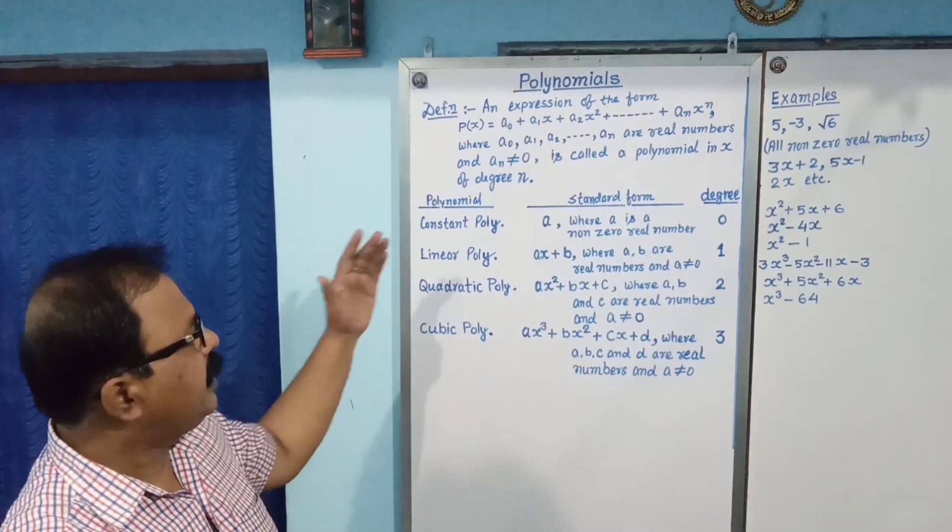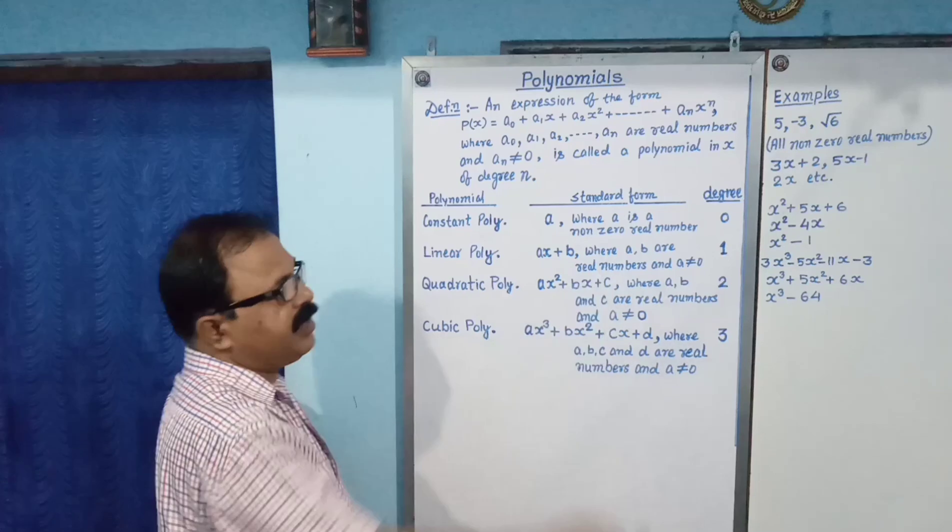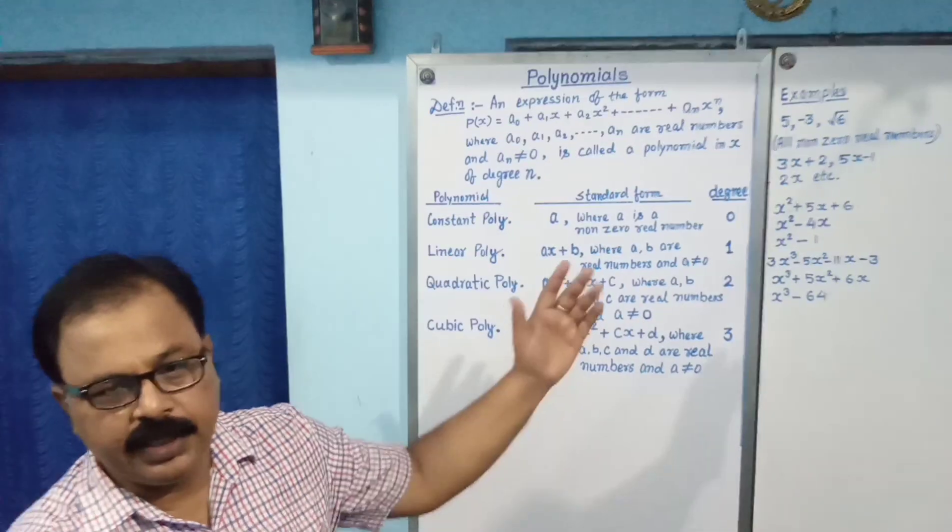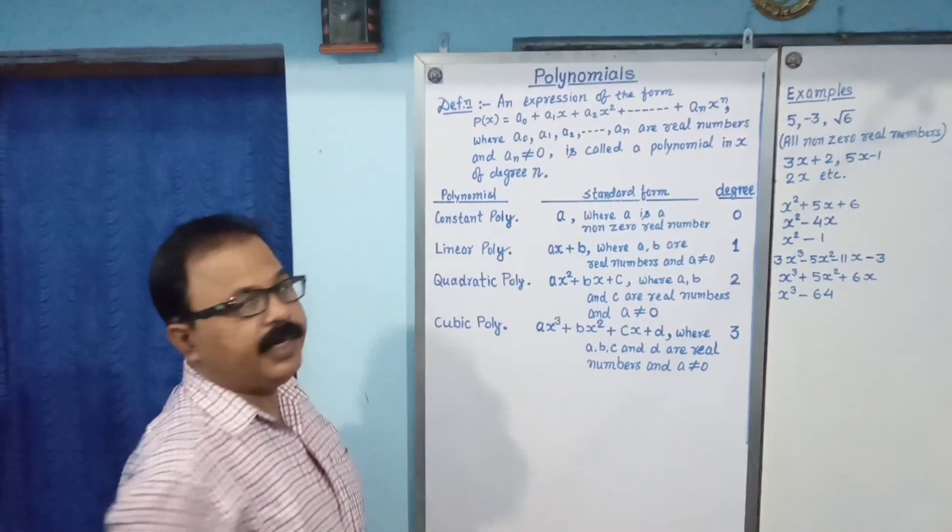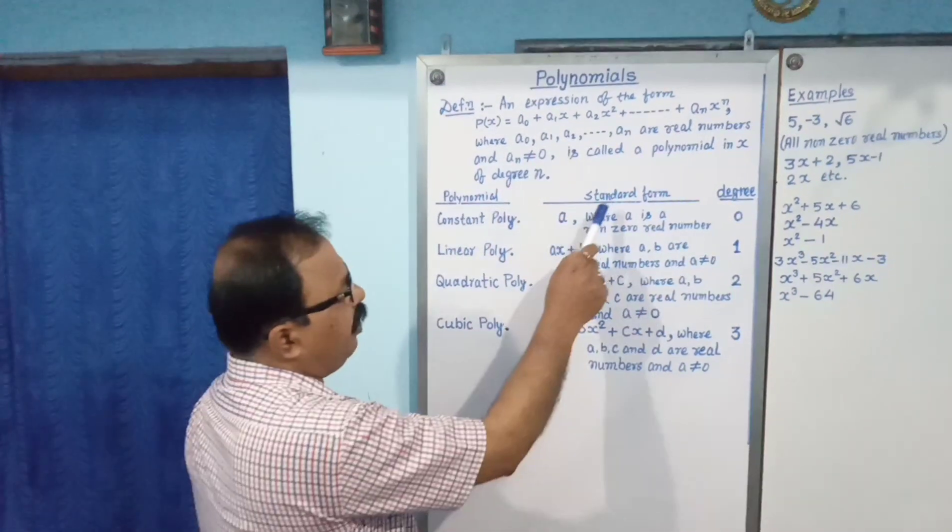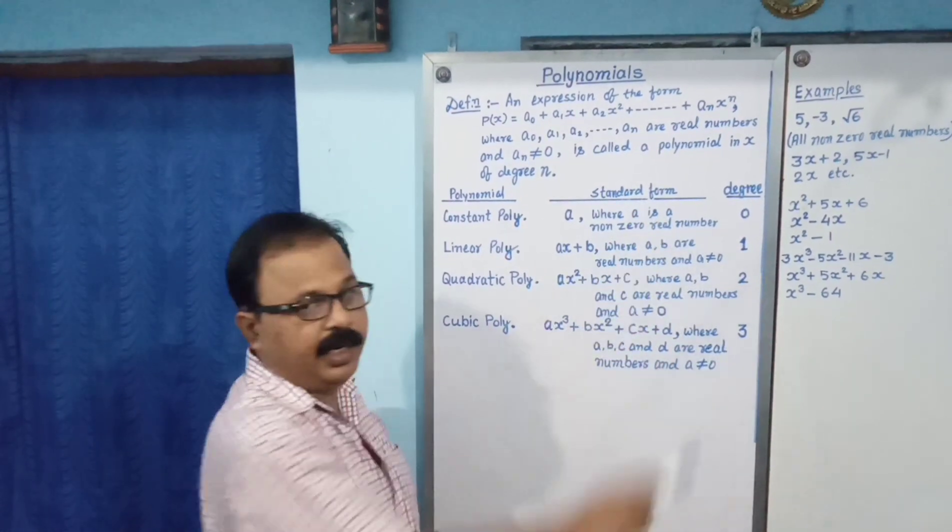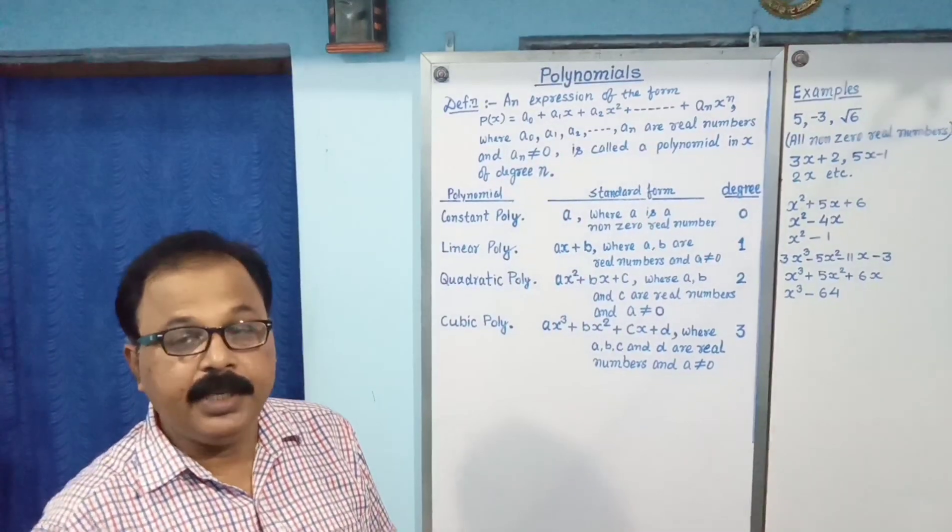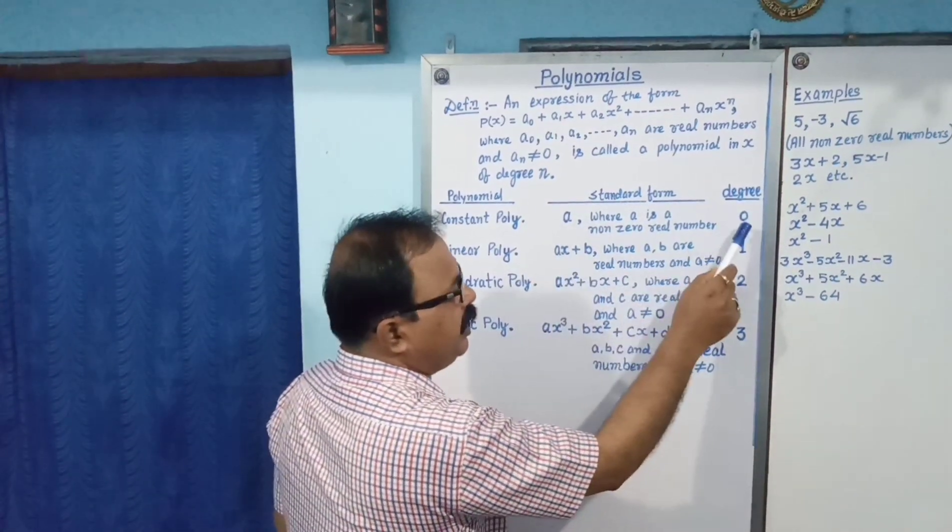Here, some polynomials and its standard form with degree. First of all, constant polynomial. Standard form A, where A is a non-zero real number. And you know the degree of that polynomial is 0.